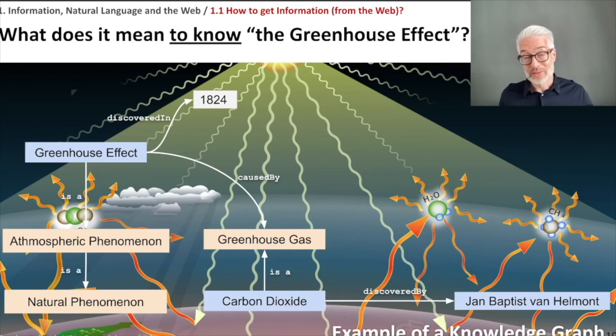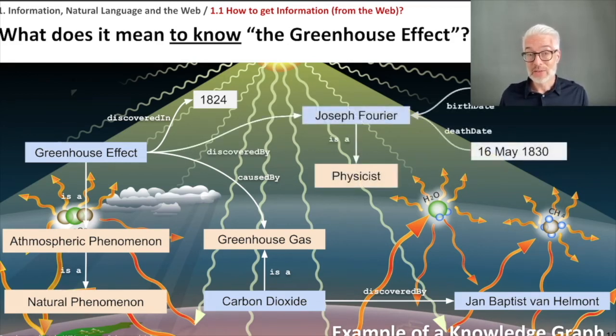More, you know from our experiment that we did recently that greenhouse effect was discovered by Joseph Fourier in 1824. You might have seen also that Joseph Fourier is a physicist, and you might know that this guy lived from 1768 to 1830. So this is a rather small example of what a knowledge graph is. However, this does not reflect the entirety of the greenhouse effect. It tells you only a glimpse of the knowledge of things which are known around the greenhouse effect and how it can be explained, how it relates to other things that also all have to be explained to really understand them.